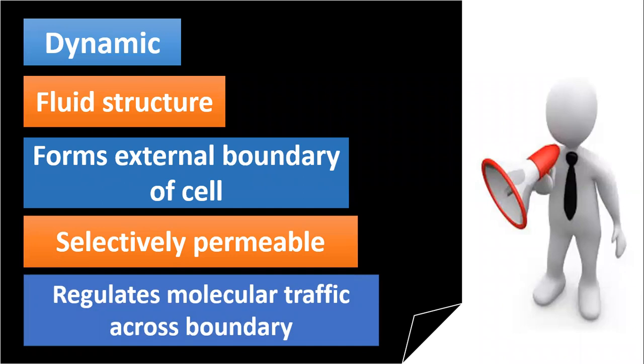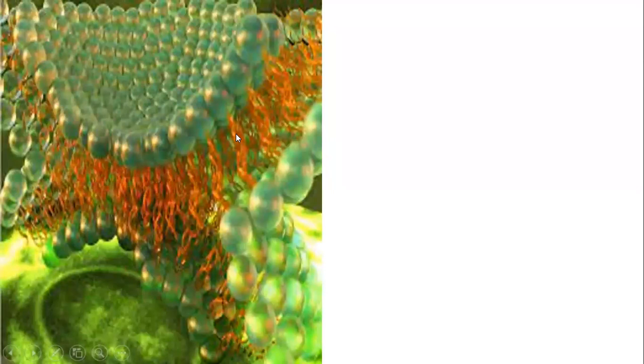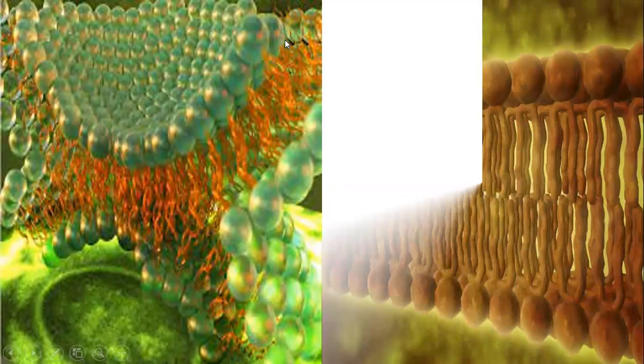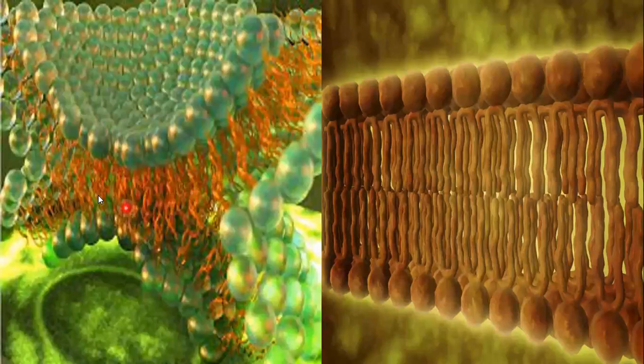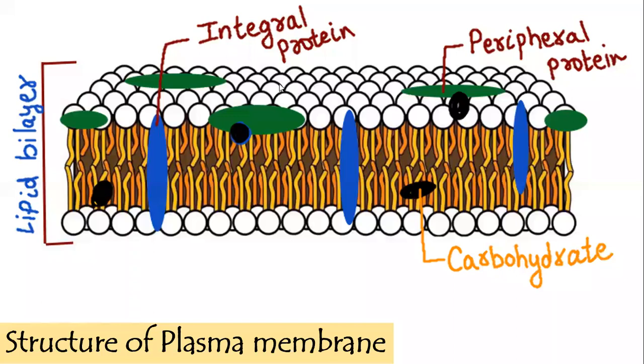As it is selectively permeable, it can decide which molecules can move through the plasma membrane. If we look at the structure of plasma membrane, it somehow looks like this in a 3D microscope. You can see that this structure is magnified here, and you can see the bristle-like structure forming a bilayer with heads on their terminal ends.